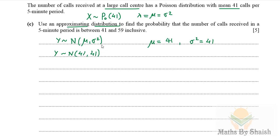So now according to this, the question becomes finding the probability of Y greater than 41 and less than or equal to 59, because it is going to be inclusive. Now we have to be very careful because we are approximating a discrete Poisson distribution by a continuous distribution.